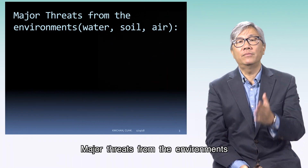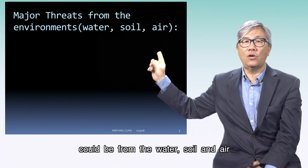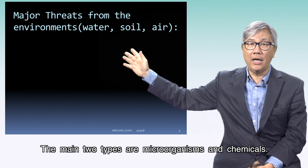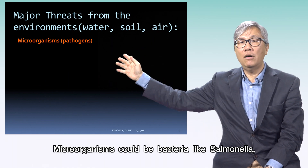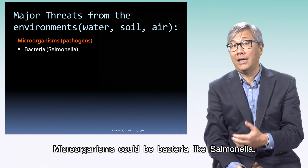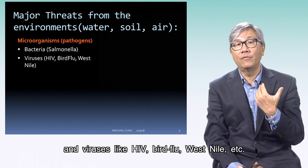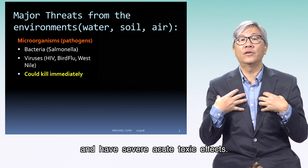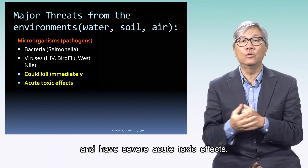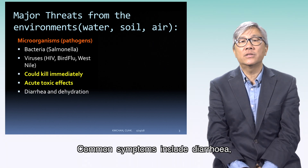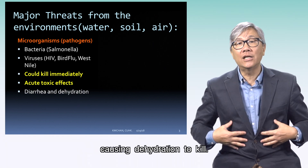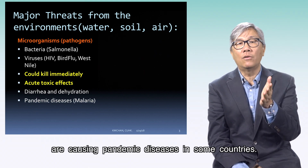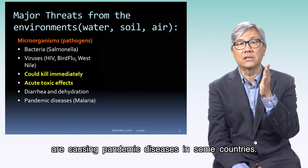Major threats from the environment could be from the water, soil, and air before entering our body. The main two types are microorganisms and chemicals. Microorganisms could be bacteria like Salmonella and viruses like HIV, bird flu, West Nile, etc. They could kill immediately and have severe acute toxic effects. Common symptoms include diarrhea causing dehydration to kill. Also, some parasites such as malaria transmitted by mosquitoes are causing pandemic diseases in some countries.